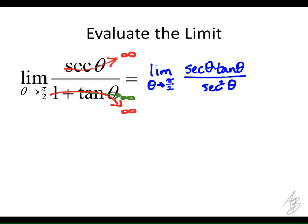We can simplify this. We could try plugging pi over 2 in again and we'd get infinity over infinity, but if we simplify first — we cancel the secants, we cancel the cosines in the tangent and the remaining secant — we really end up with just the sine of theta. So as theta approaches pi over 2, sine of theta approaches the sine of pi over 2, which is 1.